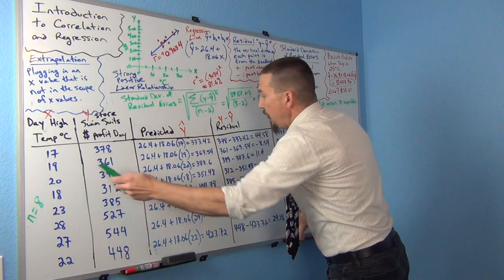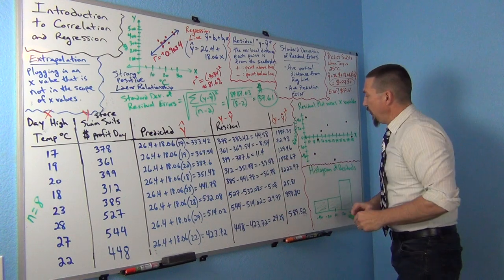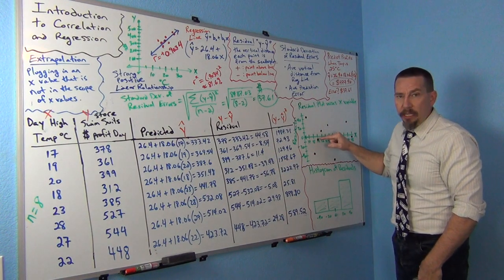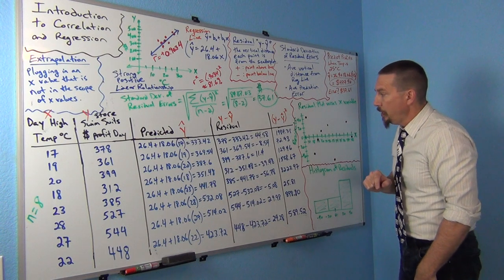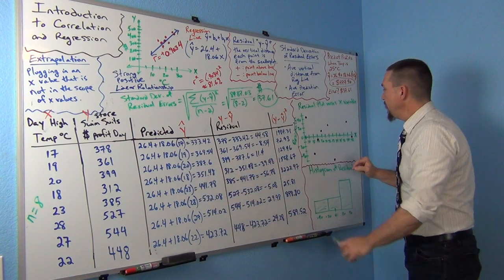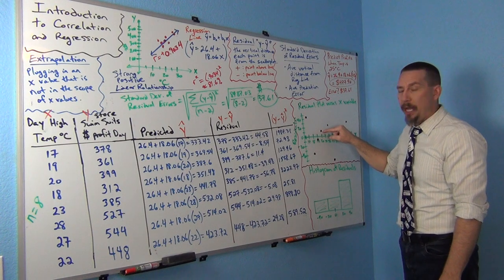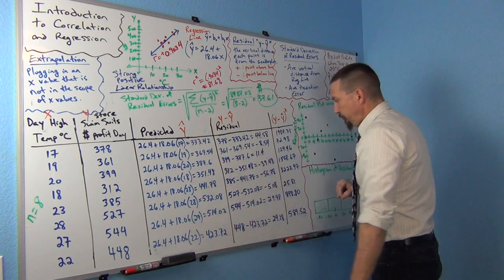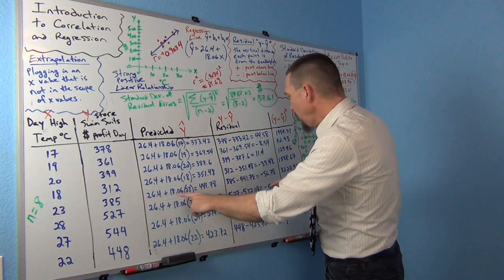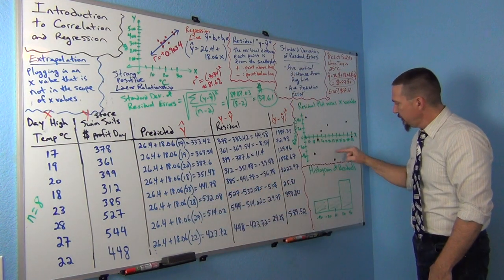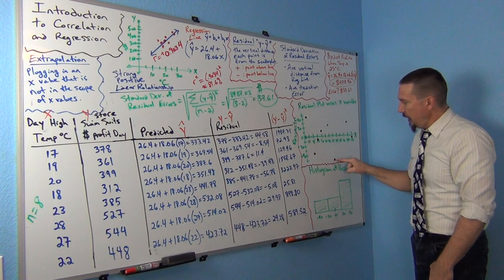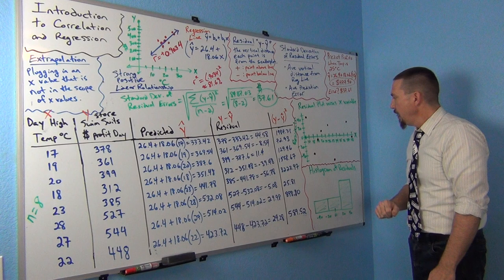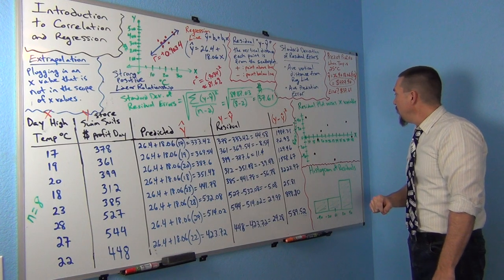So at 19 we had a residual of negative 8.54. So you can see at 19 I got a point at negative 8 right there. And so on. 20 had a residual of positive 11. So I got a point at positive 11. And so on. At 23 I had a residual of negative 56. So 23 had negative 56 there. So we got a negative 56.